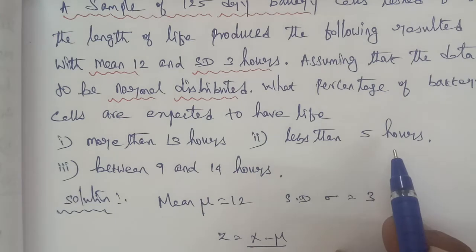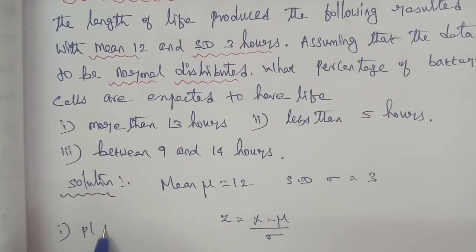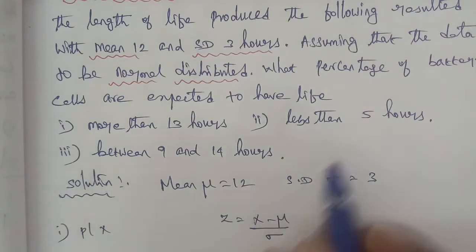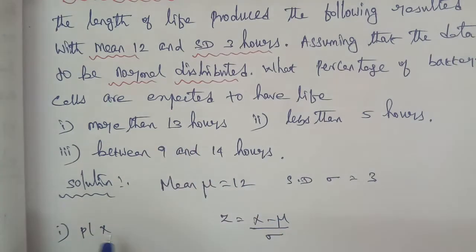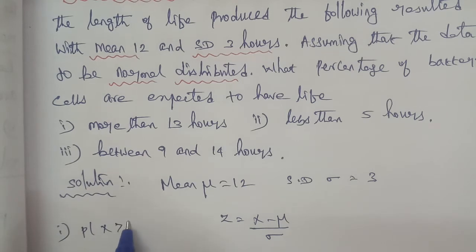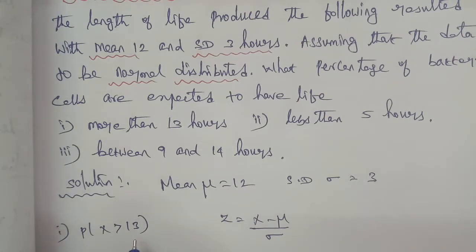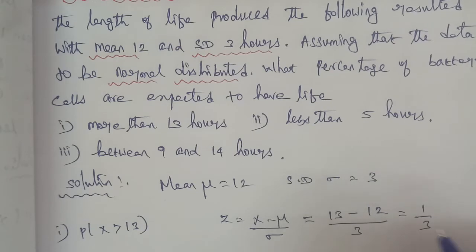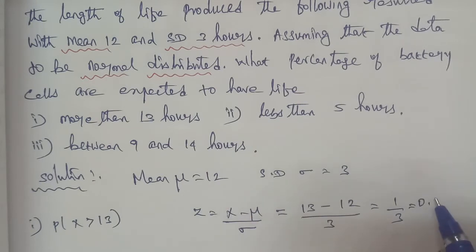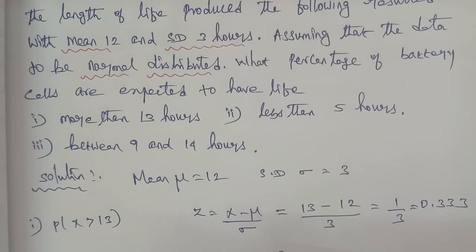Submission 1: more than 13 hours. P(X > 13). We substitute X = 13 into the formula: Z = (13 − 12) / 3 = 1/3 = 0.33. So Z is equal to 0.33.